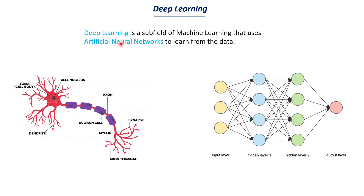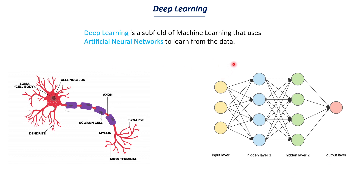Deep learning is a subfield of machine learning that uses artificial neural networks to learn from data. In machine learning, models use data to learn from it, and when you use specific models called neural networks we call this deep learning. The inspiration for deep learning comes from the biological neurons we have in our brain and body. A neural network has an input layer, multiple hidden layers, and finally an output layer. Now let's try to dive deeper into this.